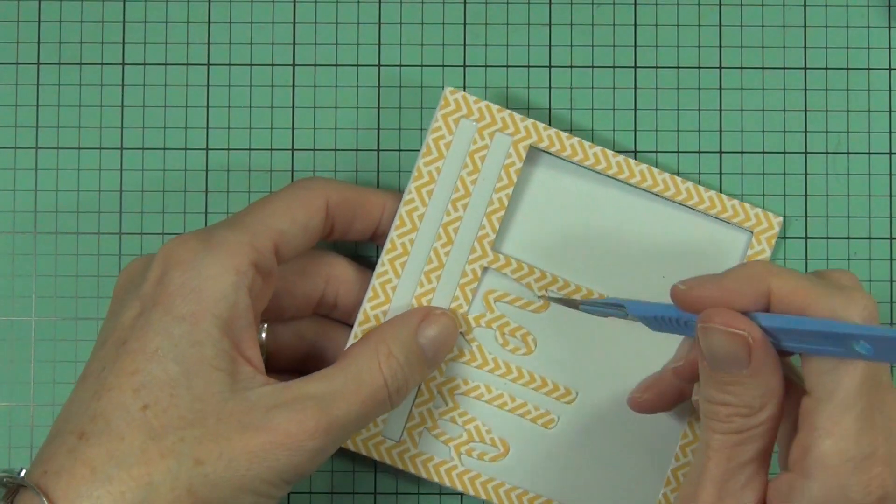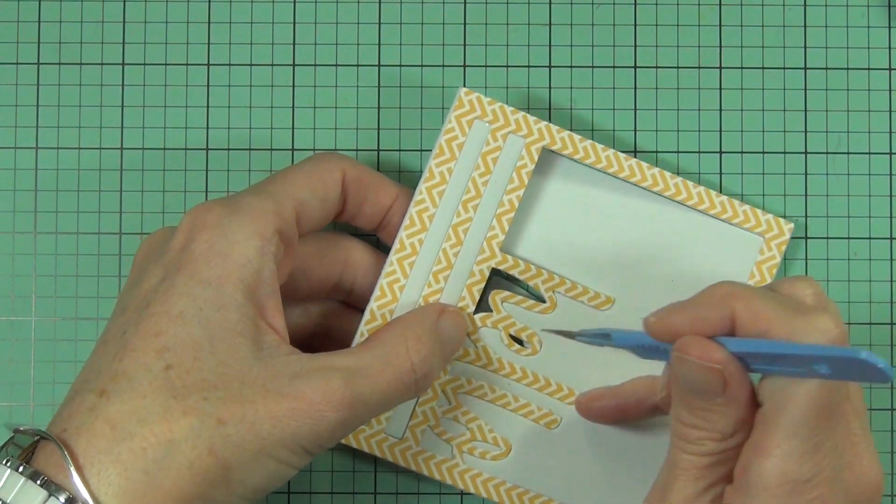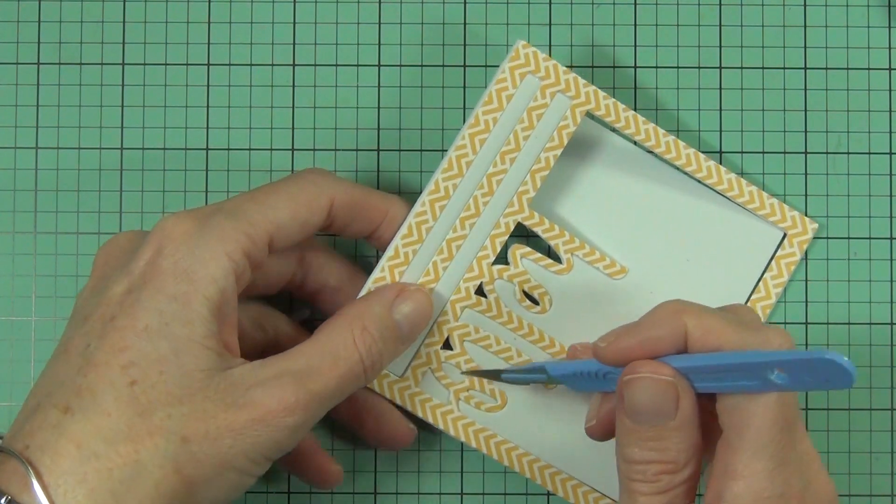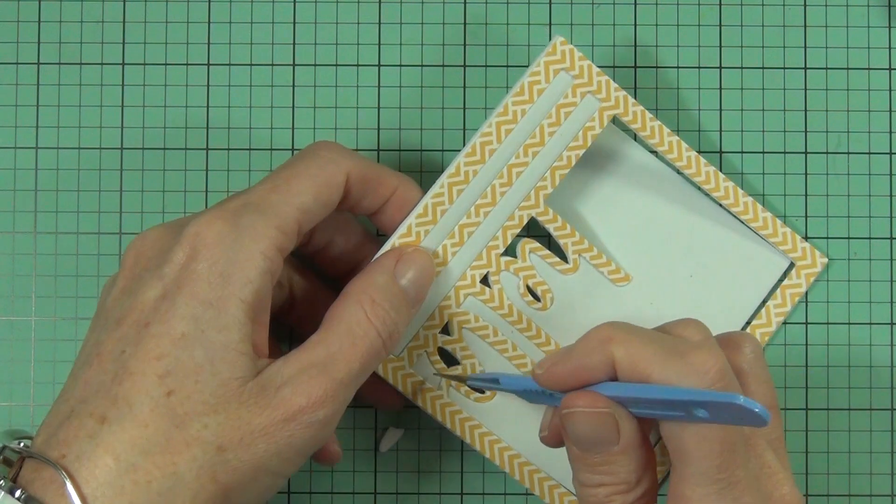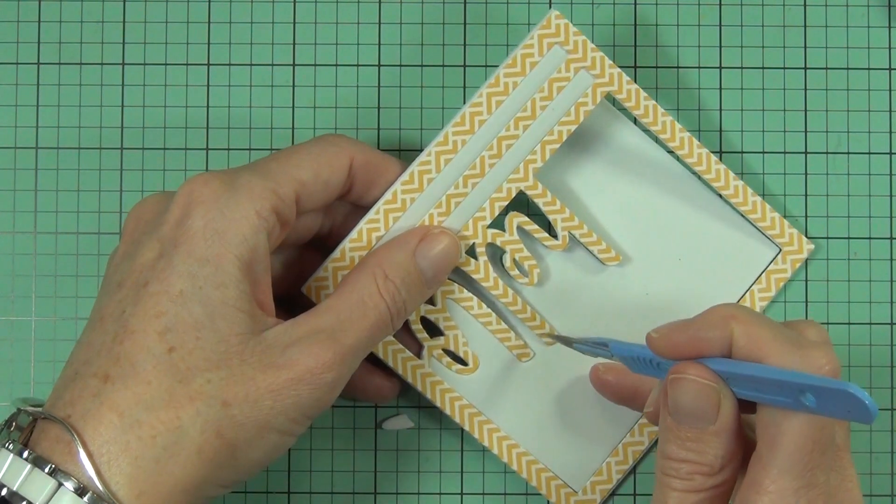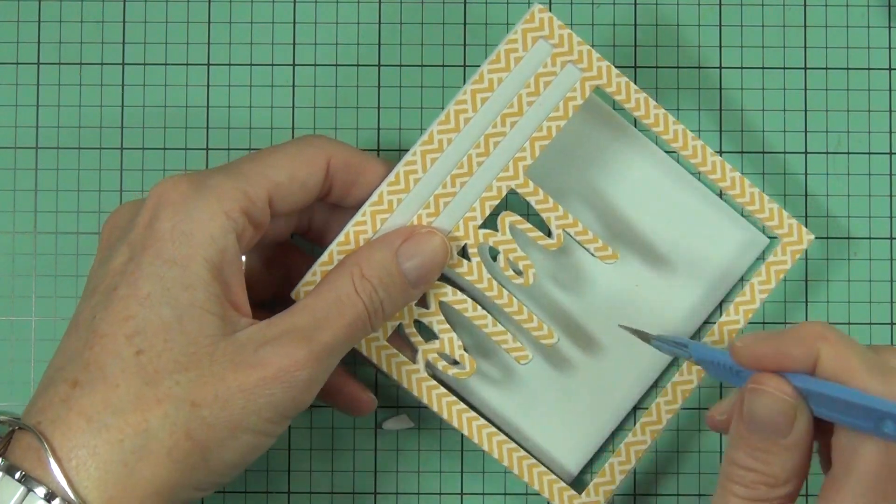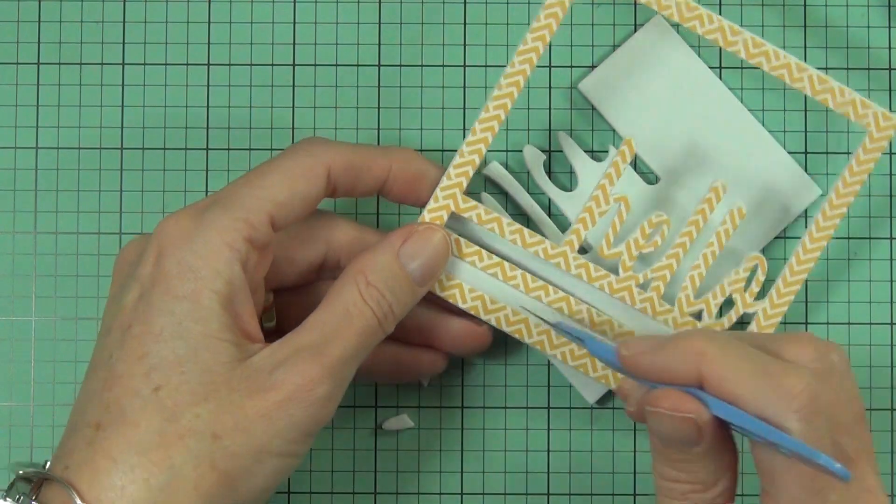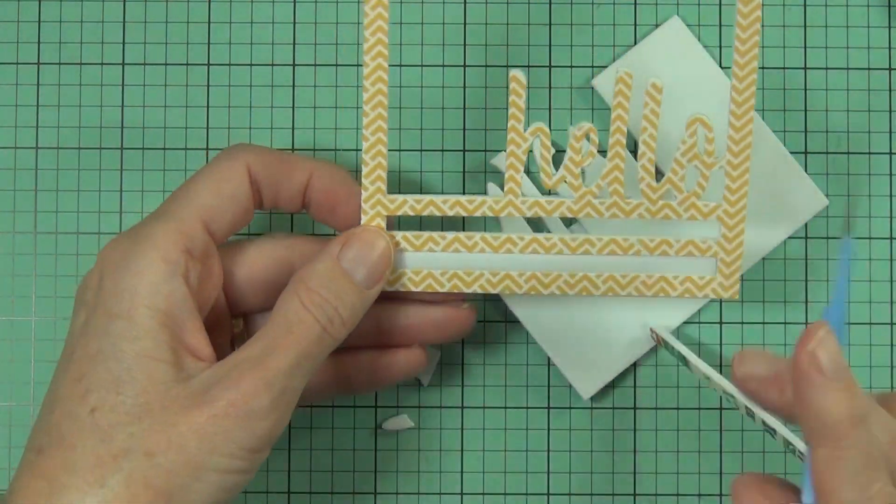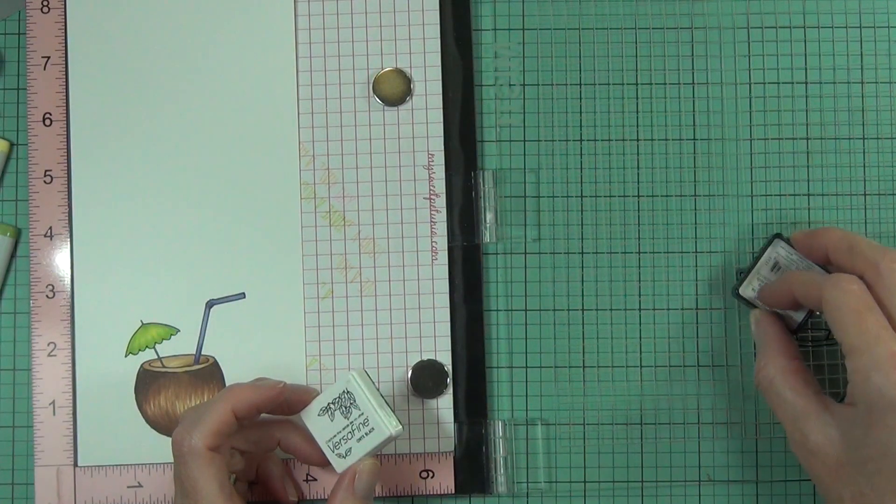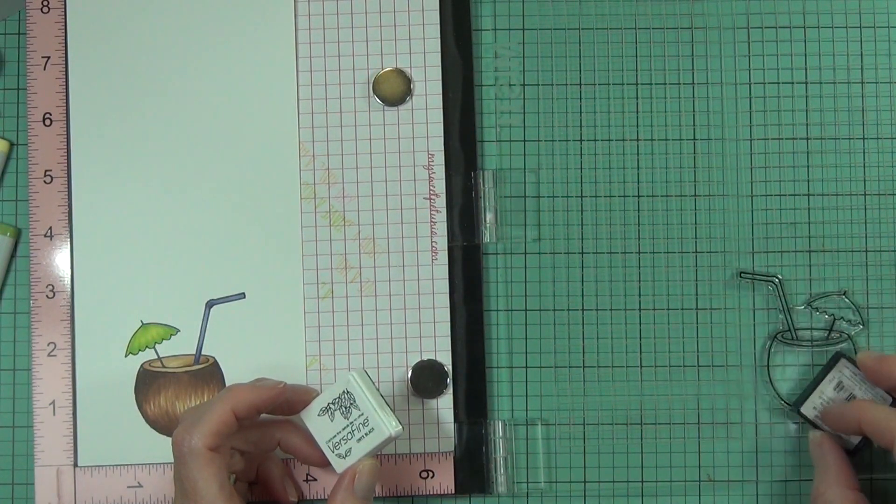Now that the die cut is all dry, I'm just going to pop away the fun foam. I'm just using my craft knife to help me here. You could also use a pokey tool or something like that. If you don't leave it long enough it won't be dry enough to do this, so if you're a little bit impatient you just have to be a touch more careful so it all doesn't fall apart on you. But the matte medium will hold well once it's dry.